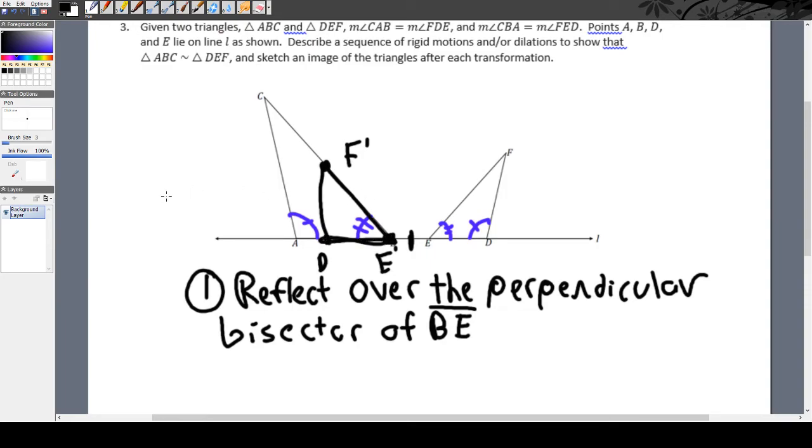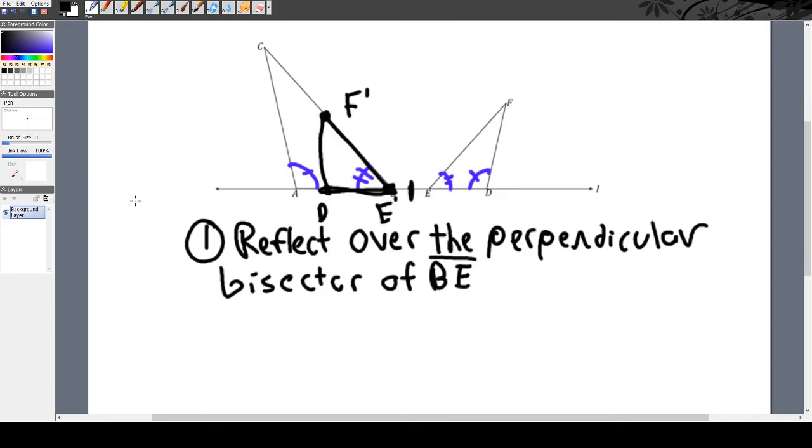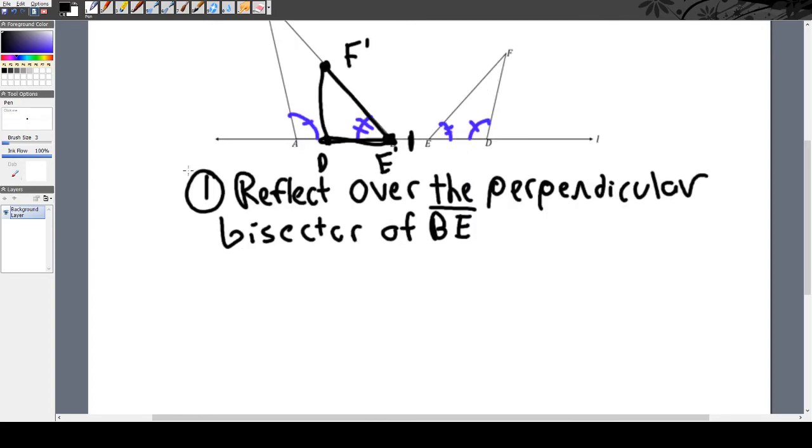And we're pretty much almost done, except all we have to do now is dilate. Because dilation is going to make the triangle bigger so that it's going to match perfectly up with C and A.